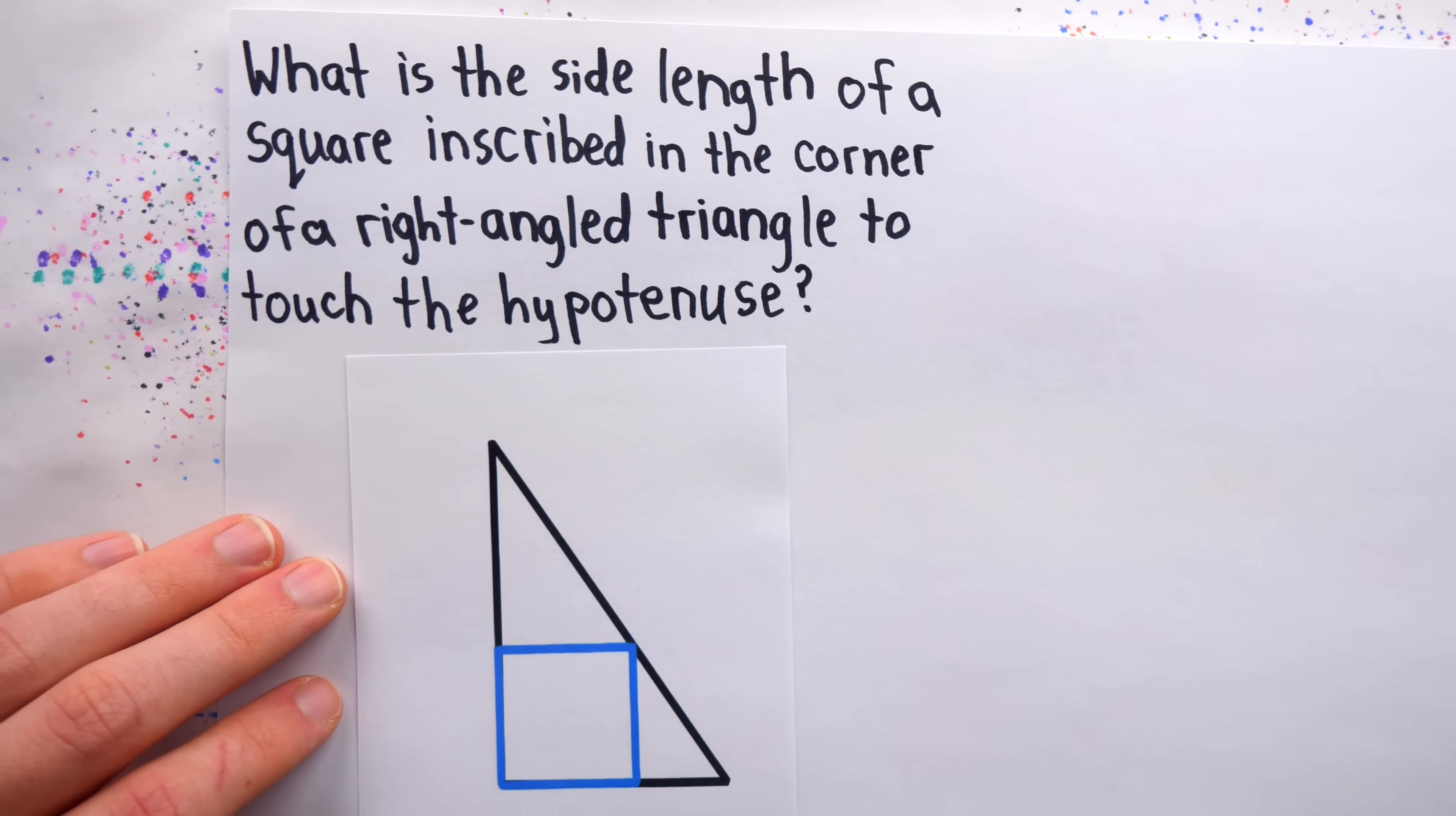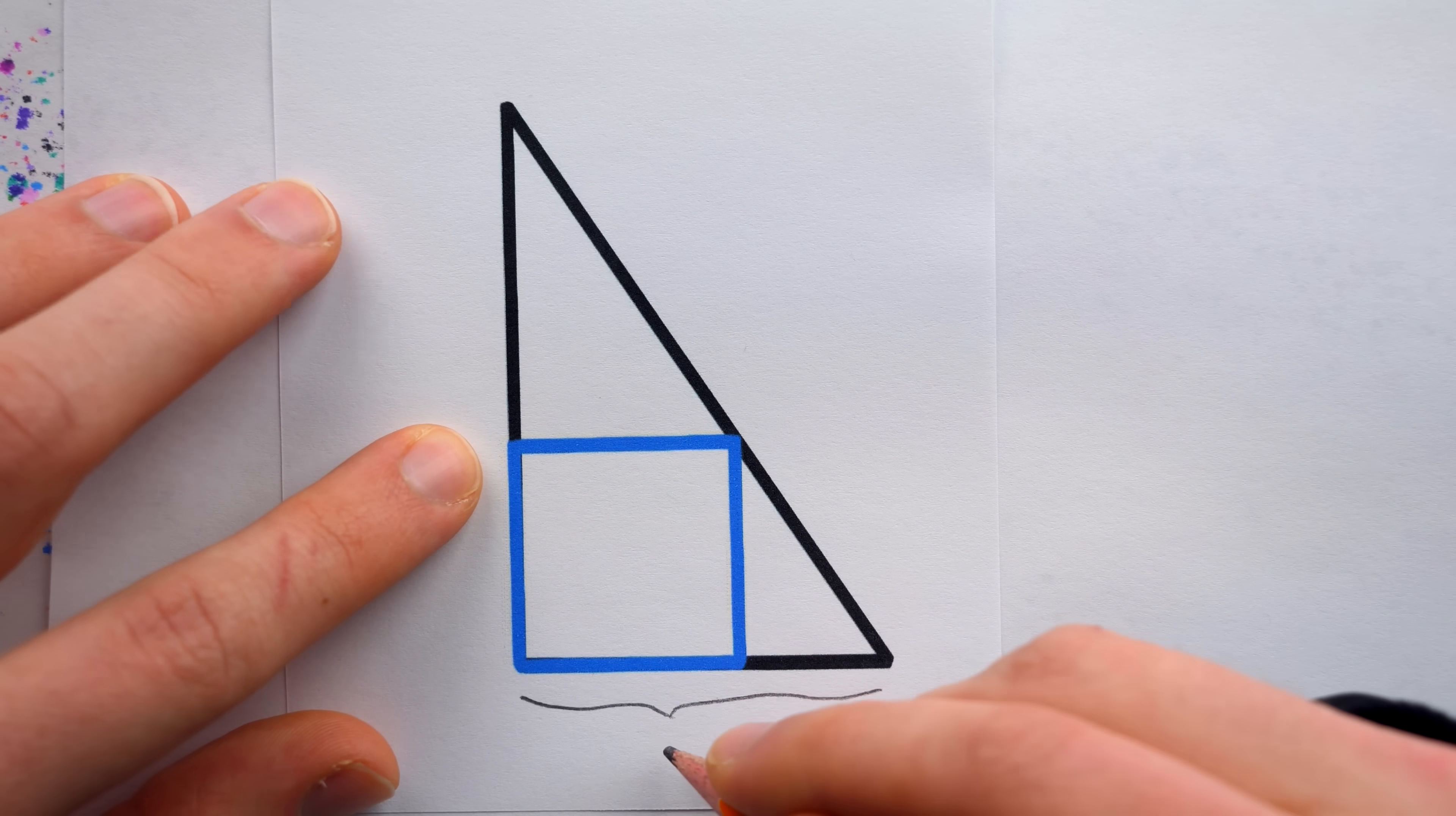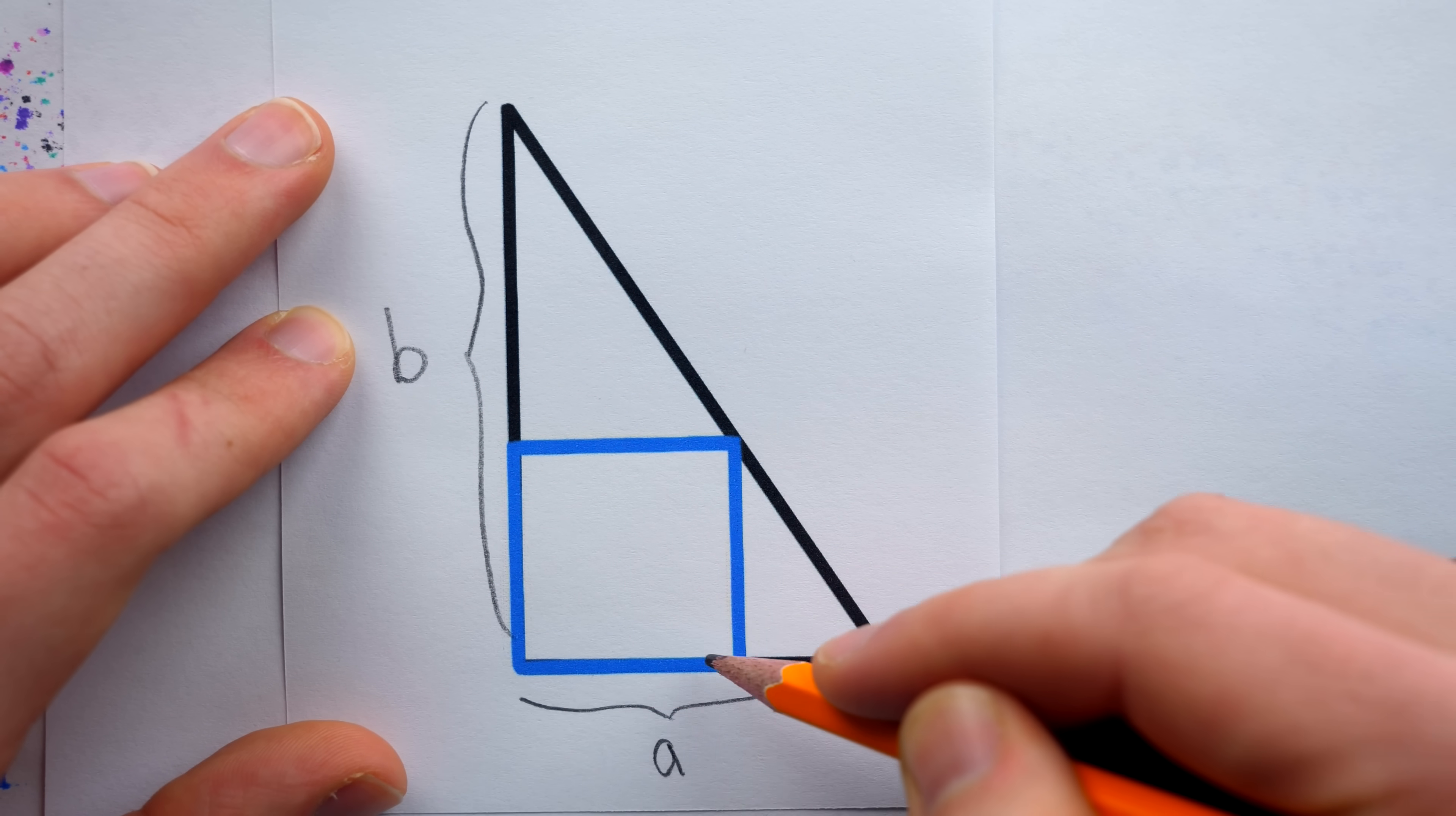Here's the relevant diagram to clarify the problem statement. The idea in this problem is that we have a right-angled triangle, and we know the lengths of its legs. Let's say the length of one of the legs is A, and the length of the other leg is B. Inscribed in the corner of the right triangle, so as to just touch the hypotenuse, is a square.